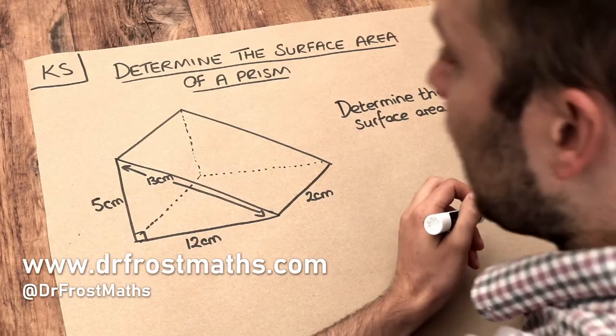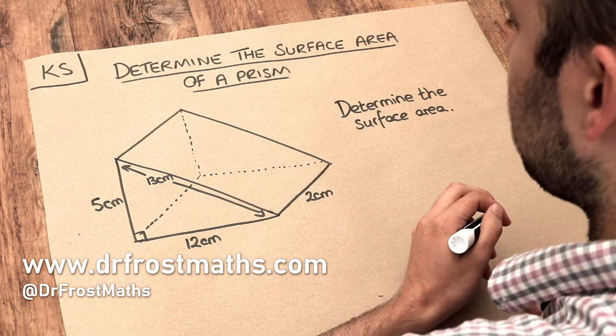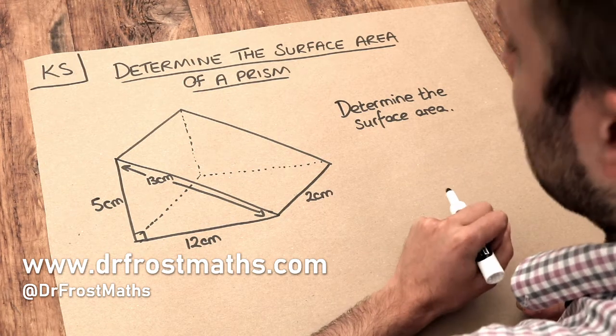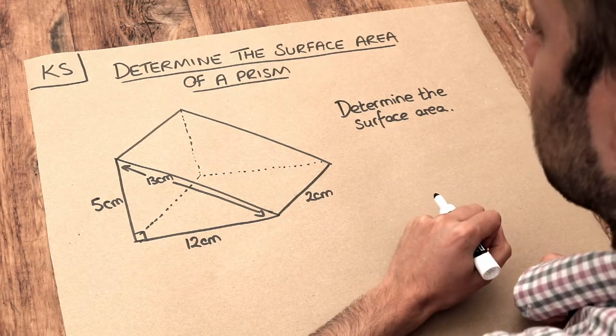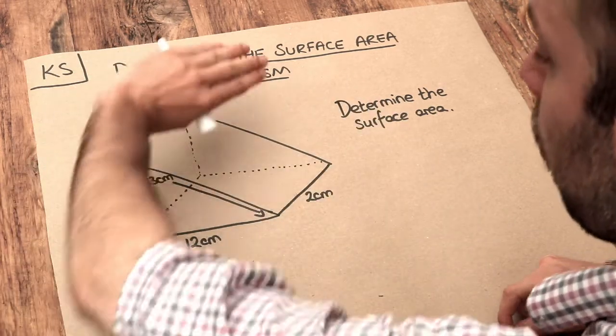Hello and welcome to this Dr. Ross Maths key skill video on determining the surface area of a prism. In a previous video we looked at the surface area of a cuboid and we saw that the surface area just means the total area of all the faces.